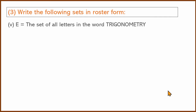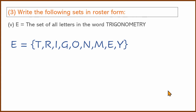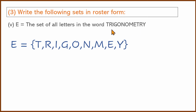Next: trigonometry — the word TRIGONOMETRY. In a set, elements are not repeated. So the letters T, R, I, G, O, N, M, E, Y — repeated letters like T, R, O are written only once in the roster form.